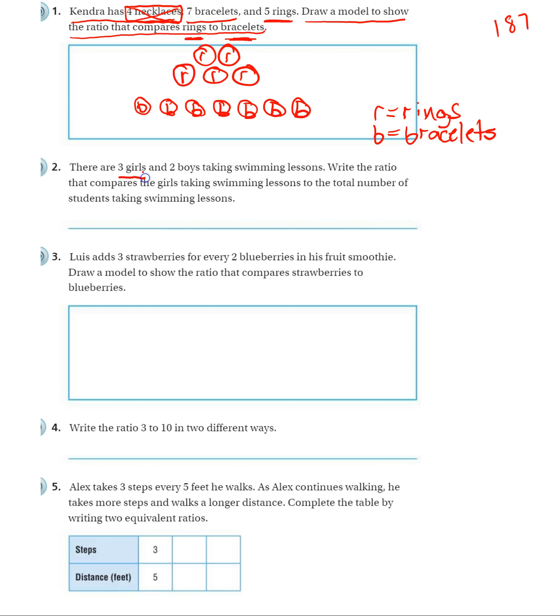Number two. Three girls and two boys are taking swimming lessons. Write the ratio that compares girls taking swimming lessons to total. So we want girls to total. So girls are three, and that's what we list first because that's what it mentions first. To total, total would be girls and boys. And is a word that clues you to add.